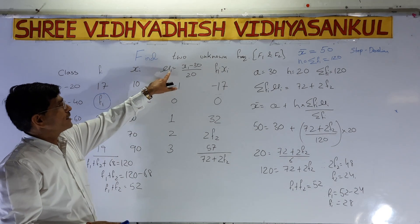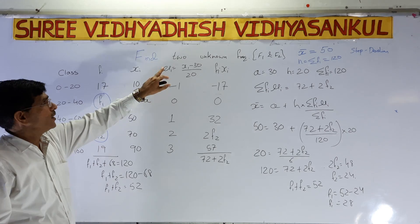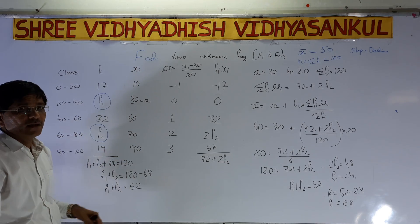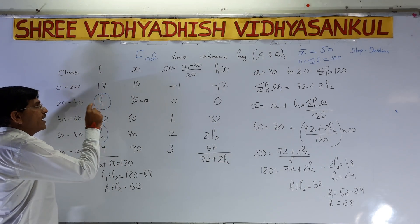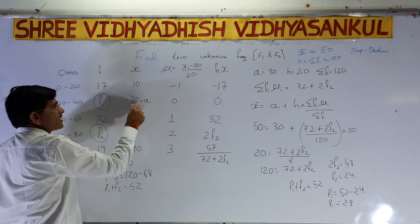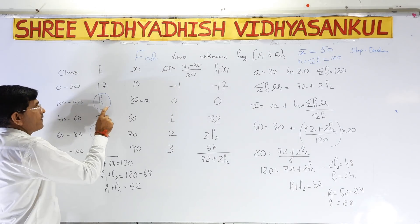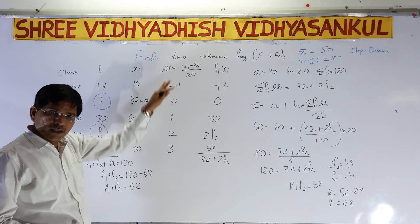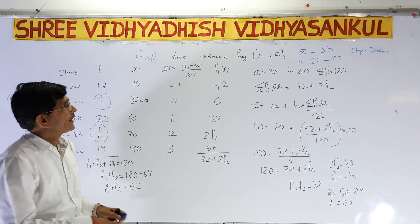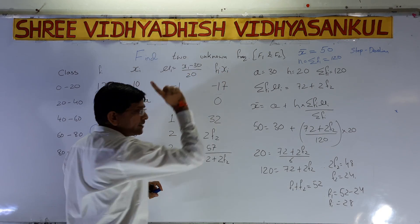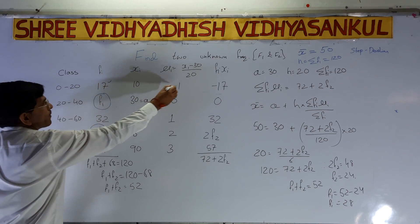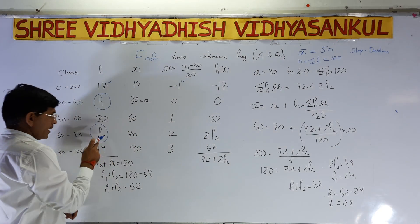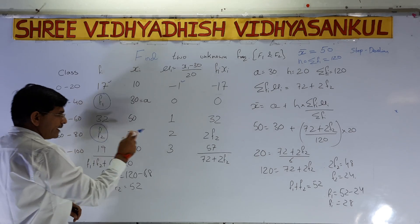We take ui = (xi − A) / h. We take A from xi where the unknown frequency is — so A = 30 (where f1 is). The ui values become: −2, −1, 0, 1, 2 (above and below 0). Now we compute fi × ui: 17 × (−1) = −17; f1 × 0 = 0; 32 × 1 = 32; f2 × 2 = 2f2; 19 × 3 = 57.